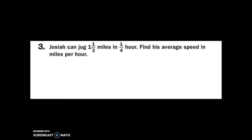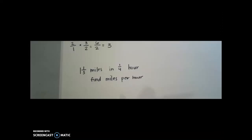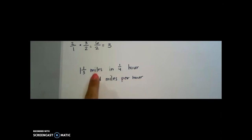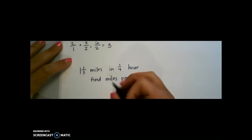Let's take a look at this word problem. Josiah can jog 1 and 1 third miles in 1 fourth of an hour. Find his average speed in miles per hour. It is important in a word problem that you pay attention to what you want to find. Since I want to find miles per hour, that means our miles number needs to come first, and then our hours come second.